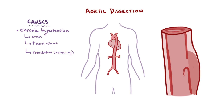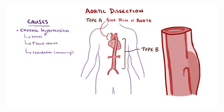Aortic dissections most often happen in the first 10 centimeters of the aorta closest to the heart. A tear near the heart or in the upper aorta is considered a type A aortic dissection in the Stanford classification system. Type B aortic dissections involve tears in the lower or descending aorta. Both type A and B aortic dissections can extend into the abdomen.